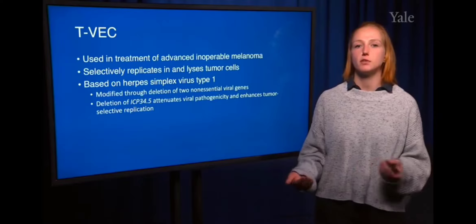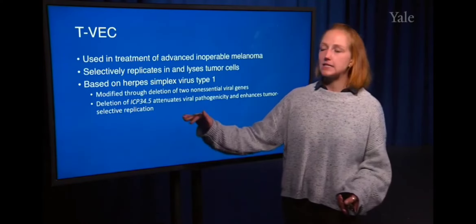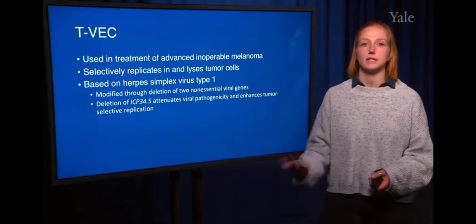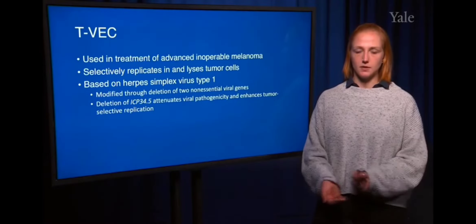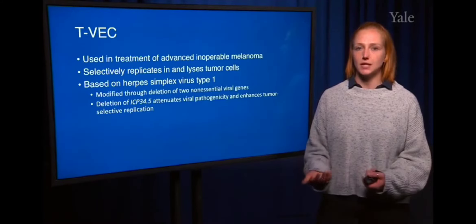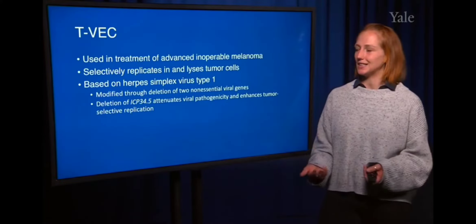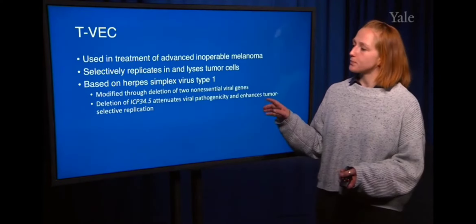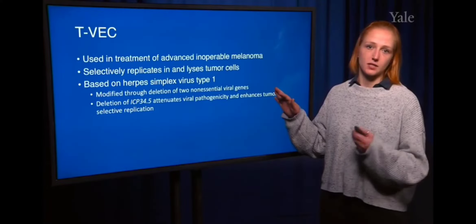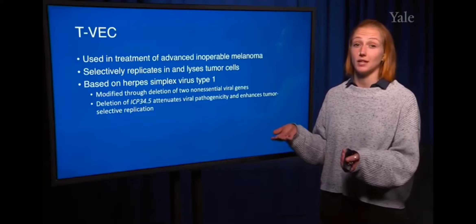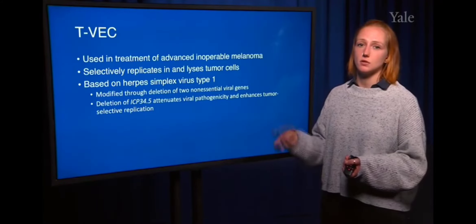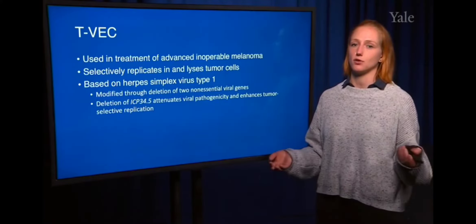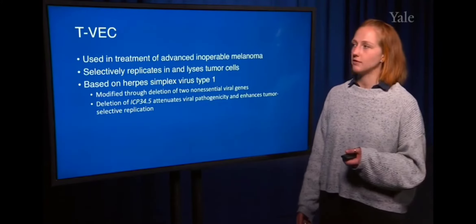In tumor cells and other highly replicating cells, protein expression is highly elevated compared to other cells. So if TVEC were to infect a non-cancer cell, it wouldn't be able to replicate very well because it can't induce protein translation to the level it needs. However, tumor cells are already doing a ton of protein translation, so the lack of ICP 34.5 actually makes TVEC replicate very quickly in cancer cells.